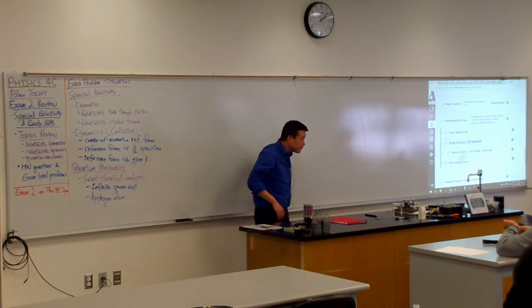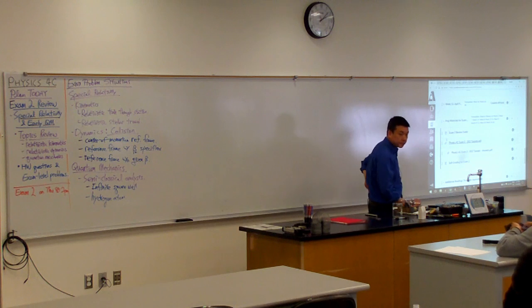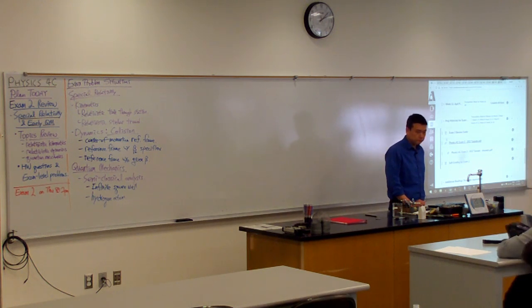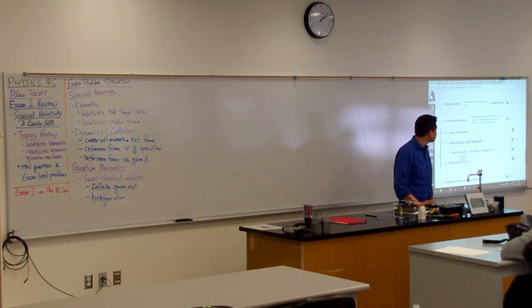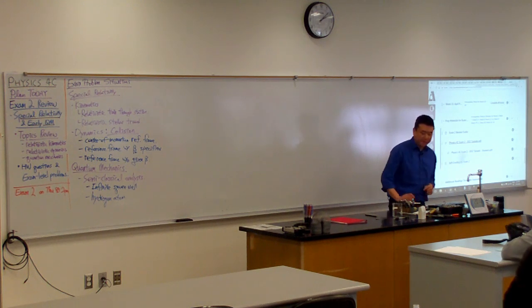For the uncertainty principle, in Giancoli and the new textbook, they are different. How are they different? They have a factor of one-half. In Giancoli, the product is larger or equal to H-bar, which means the new textbook is... Yeah.